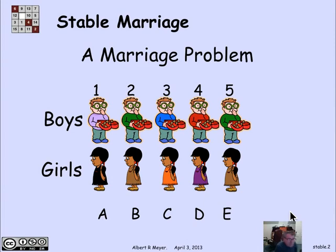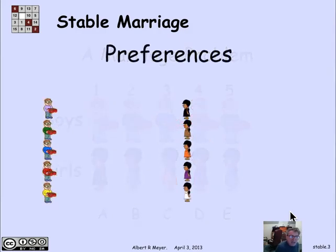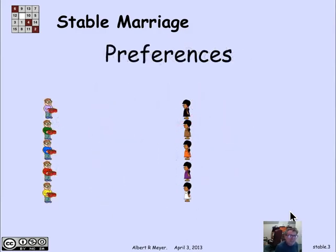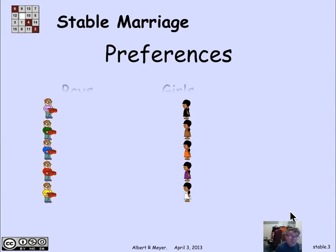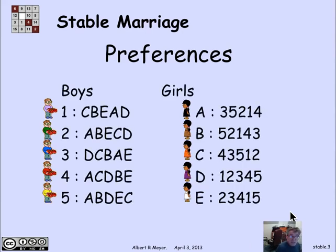The setup is that there's some number of boys — in this case five, one through five — and an equal number of girls labeled A through E. Each of the boys has a ranking of the girls, different rankings, because different boys have different preferences. And likewise, the girls have rankings of the boys, with different girls having different preferences.